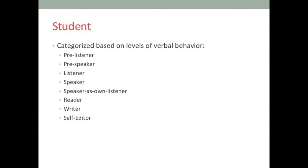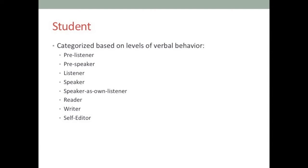Students in the CABAS system are categorized based on levels of verbal behavior. In the Fred S. Keller School, students are not grouped by age per se — they're grouped based on levels of verbal behavior. We categorize students as pre-listener, pre-speaker, listener, speaker, and so on. A student considered a pre-listener is basically a student who is fully dependent on others.